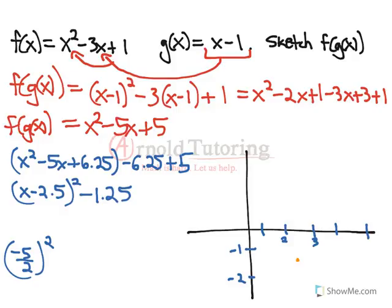And my y intercept is quite easy to find as well because I can just plug 0 in for x here. My y intercept is at 5. So if I count up 1, 2, 3, 4, 5. Plug that there.